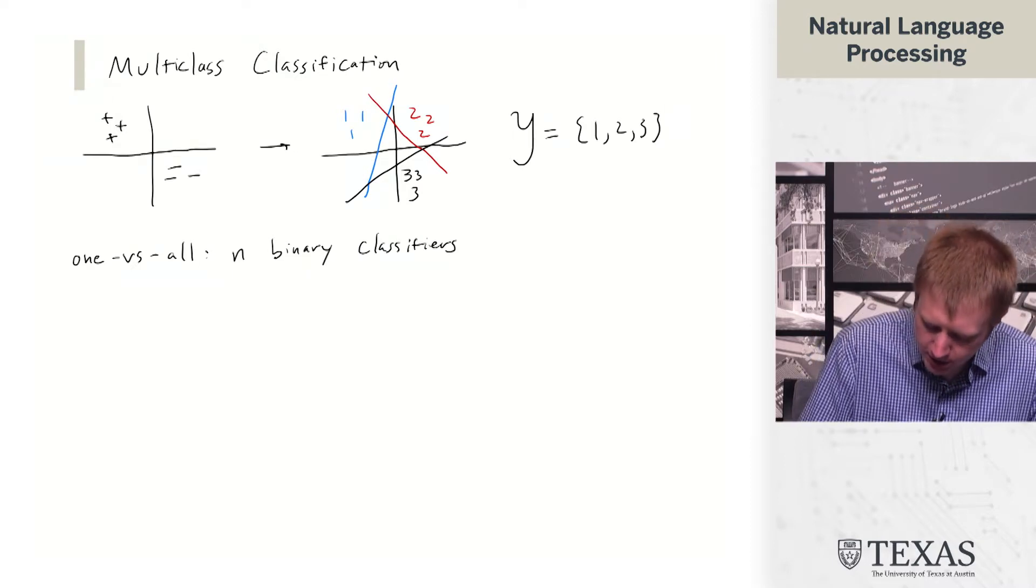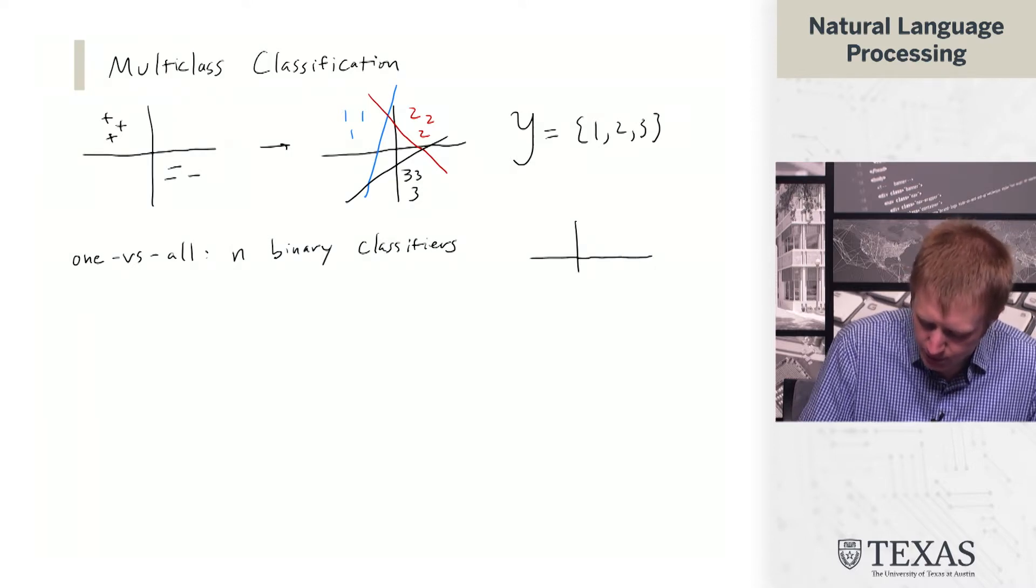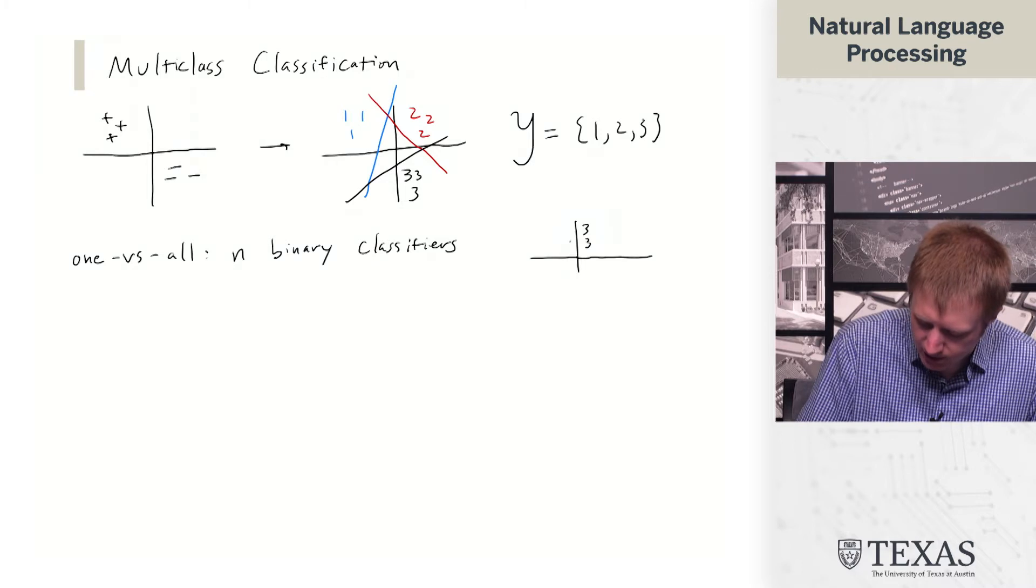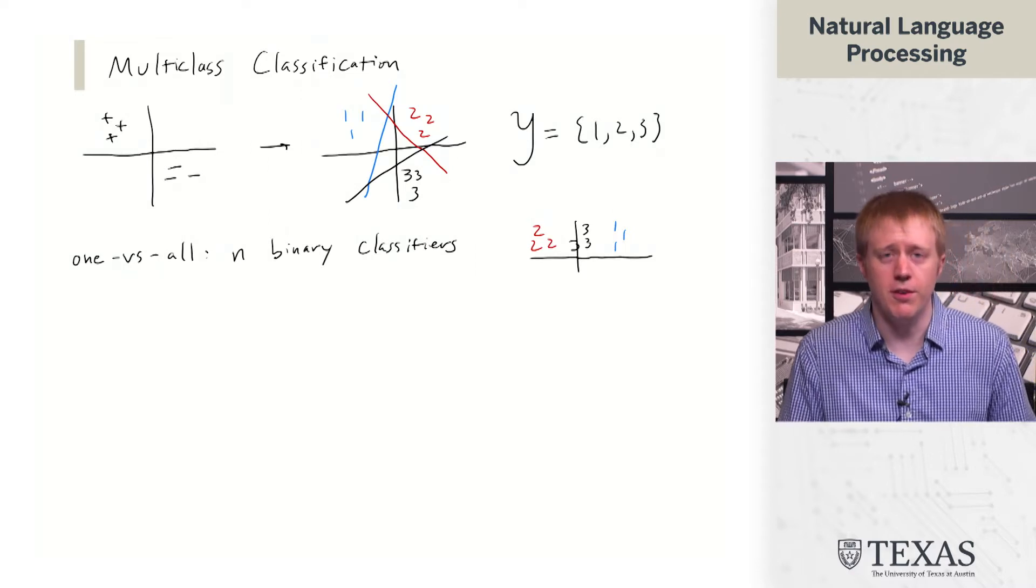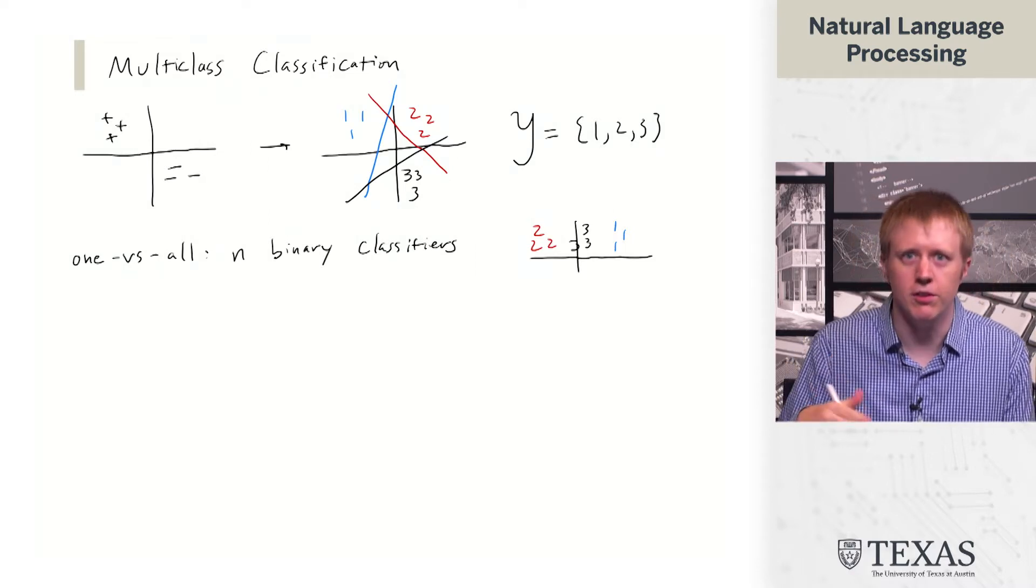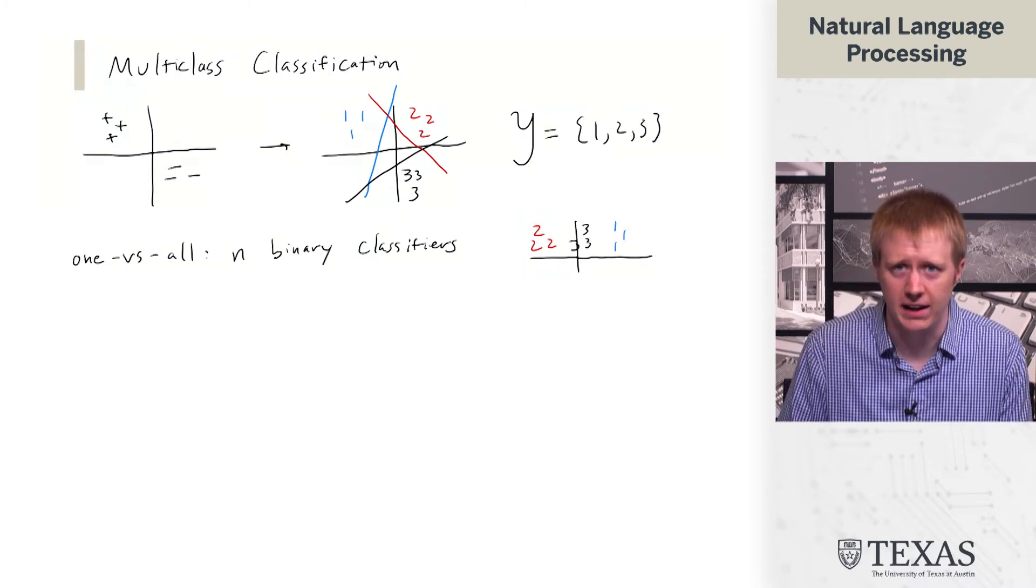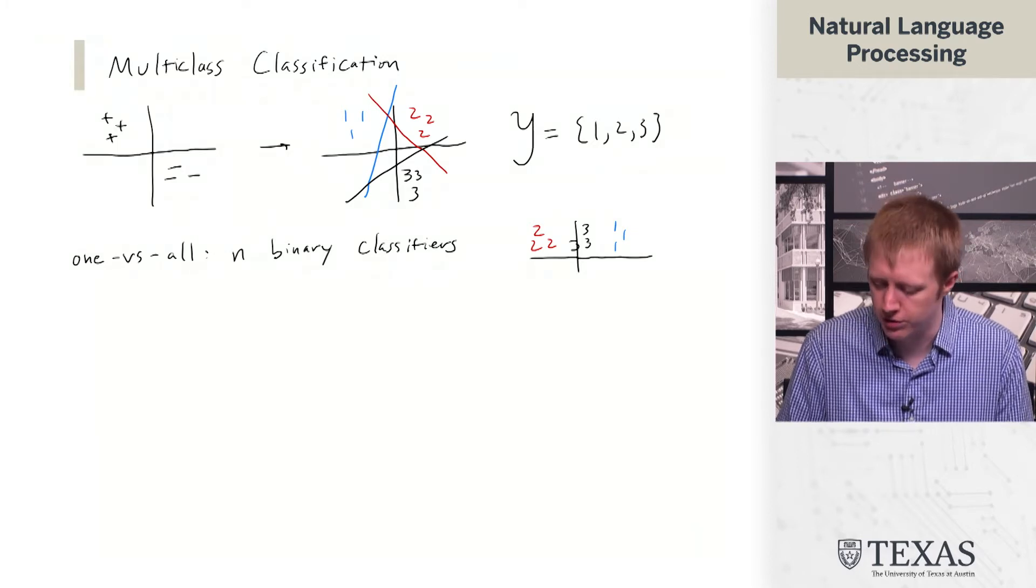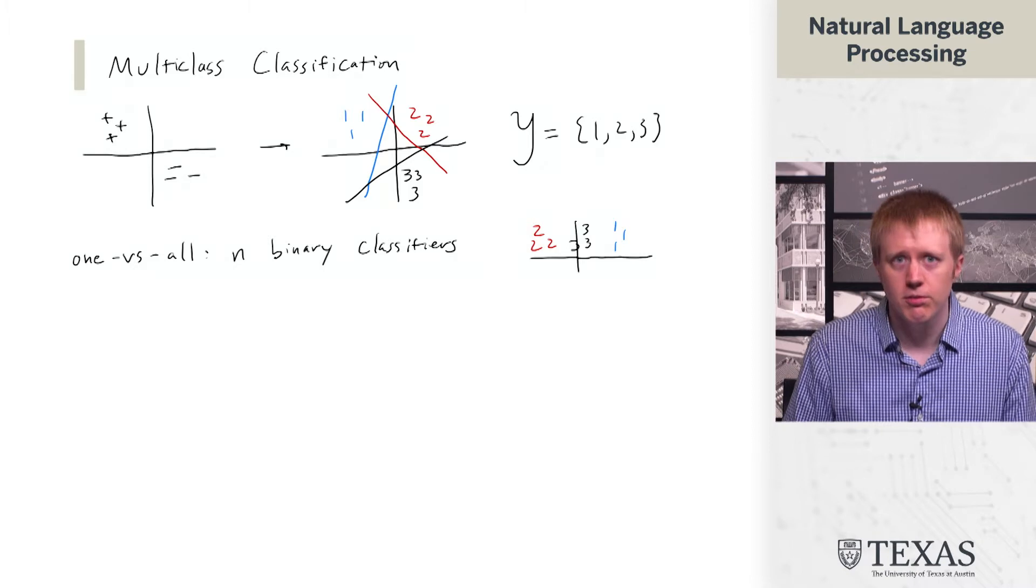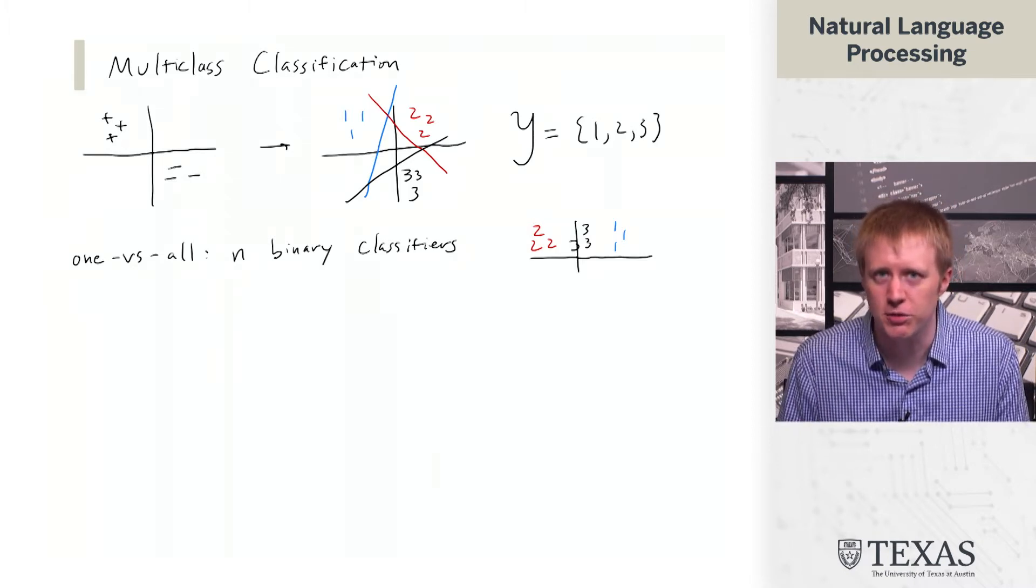But there are times when this doesn't work. You should be able to convince yourself that if we've got something that looks like this, you would need more than linear classification to handle the fact that the threes can't be separated from the ones and twos so easily. So we want to avoid hacks like this and instead just do things the right way.